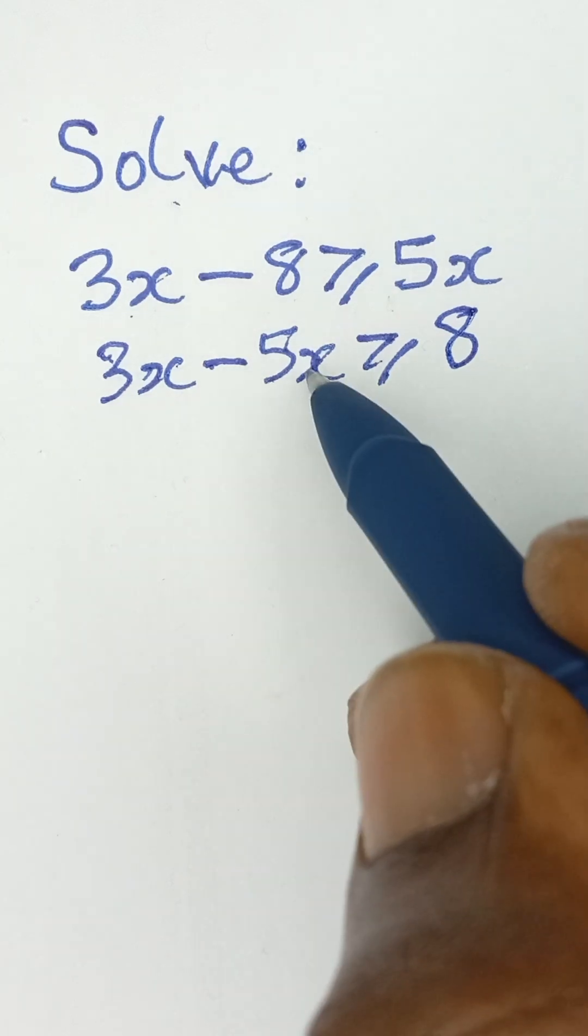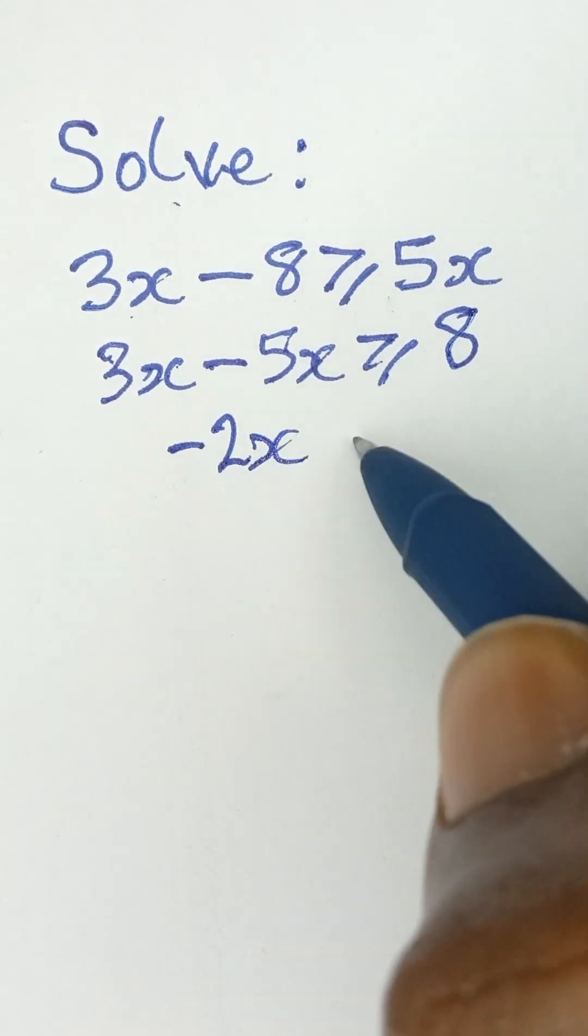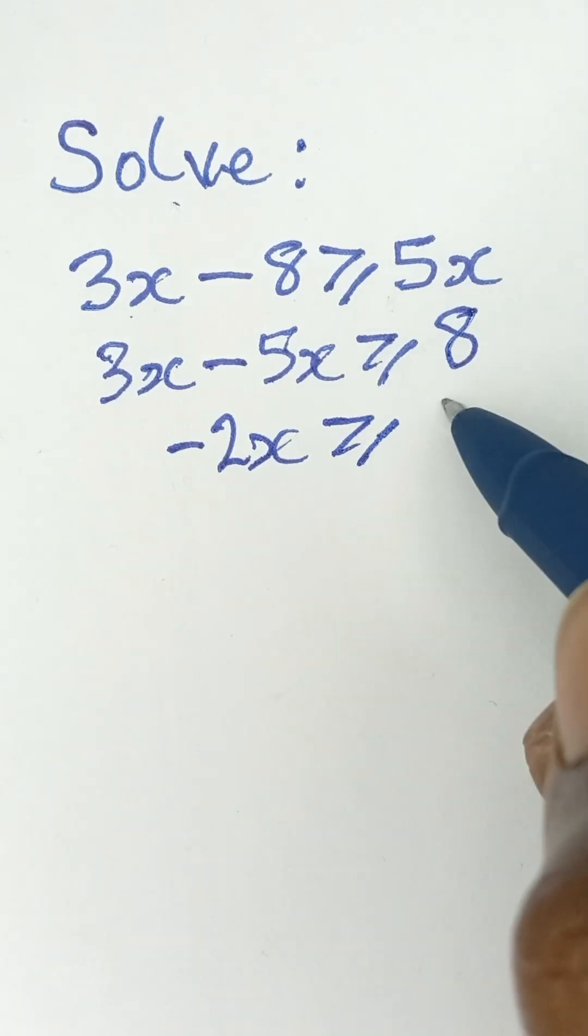Now, 3x minus 5x will give us negative 2x. And that is greater than or equal to 8.